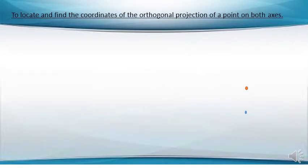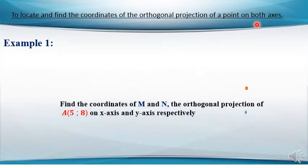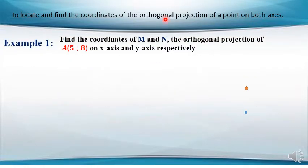So now we are ready to start. Let's learn how to locate and find the coordinates of the orthogonal projection of a point on both axes — on the x-axis and on the y-axis. Orthogonal means perpendicular.